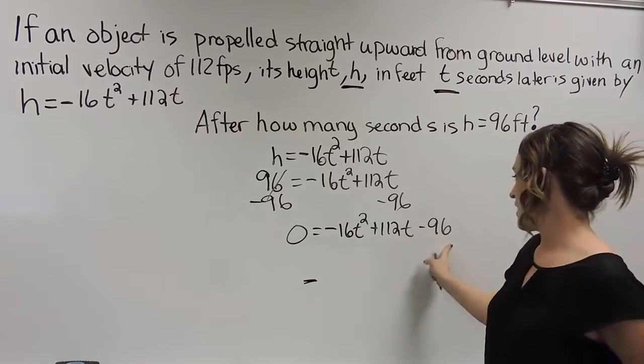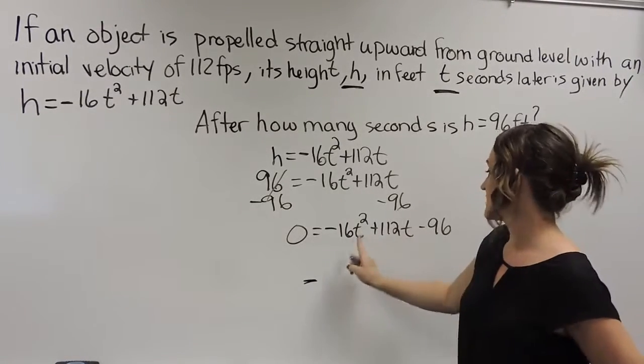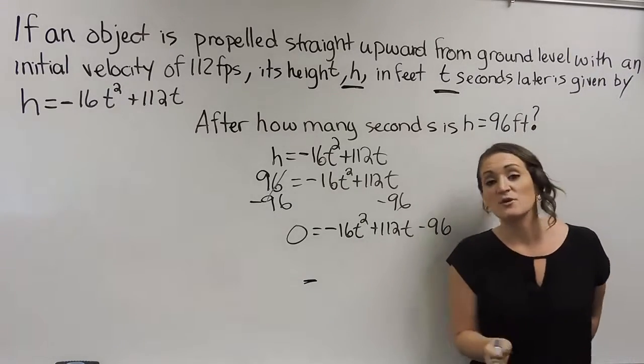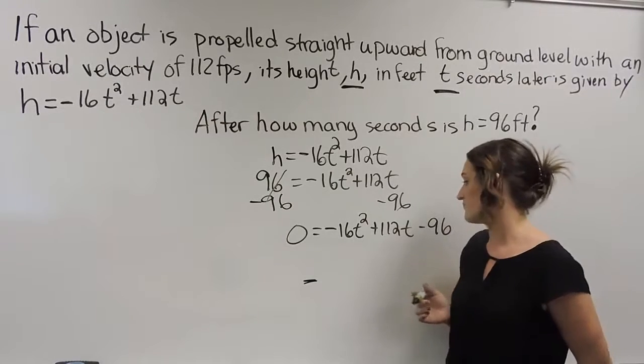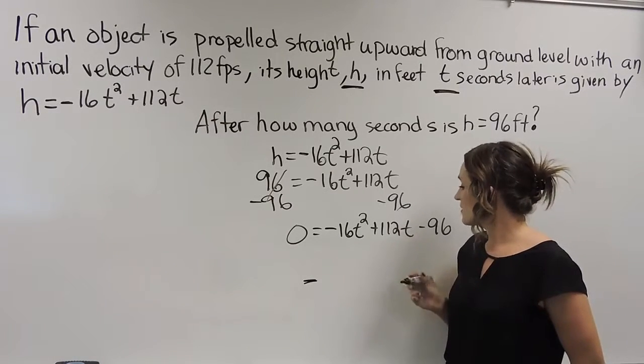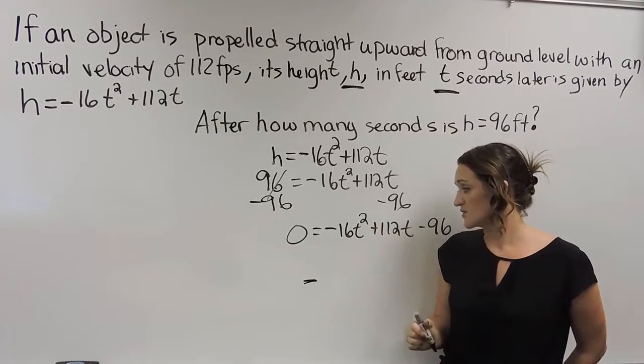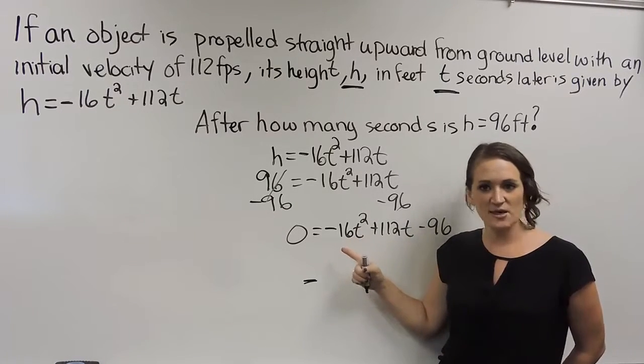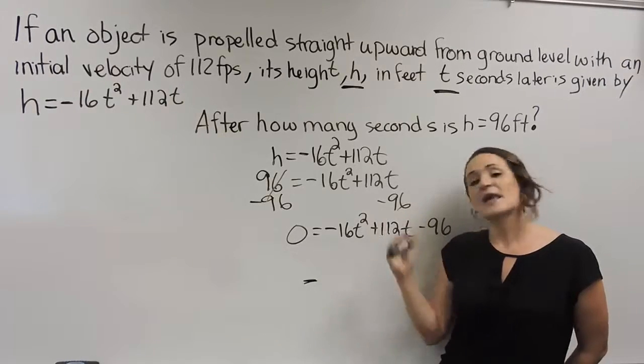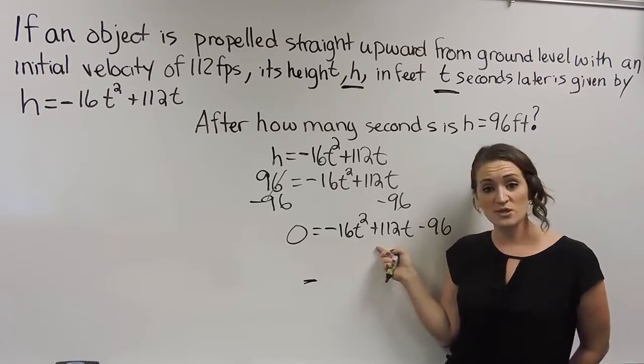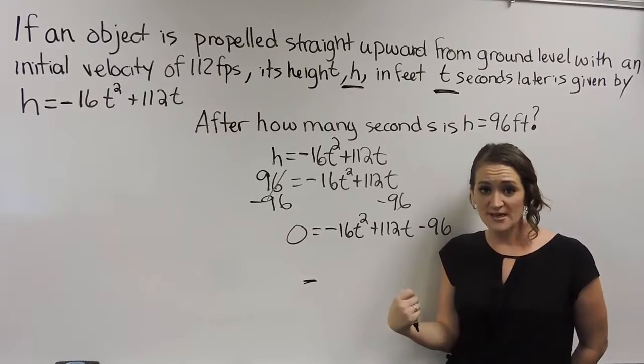Then looking over my problem here, starting with our numbers, 16, 112, 96. And we need to figure out, is there a number they have in common? Now these are slightly big numbers, but you know what? 16 happens to be the greatest common factor here. The fact that this 16 here is in front, I kind of just started with that one and tested it out. And 16 actually does go into 112. It does go into 96.